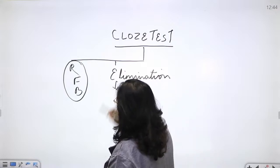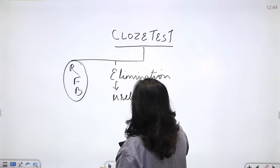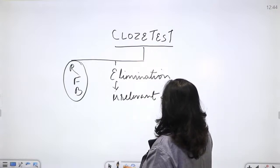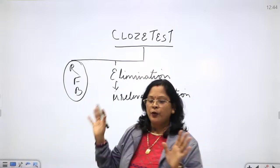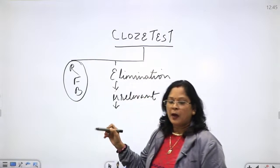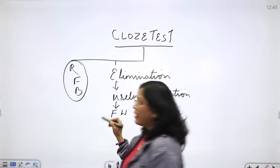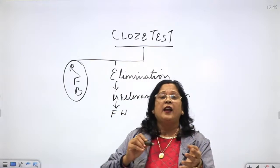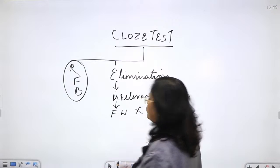First of all, what do we have to eliminate? We have to eliminate the first option which is our irrelevant option. This means the option that makes no sense - we have no sense of it. When we have removed this option, we move to our second option, and that is the factually wrong option.